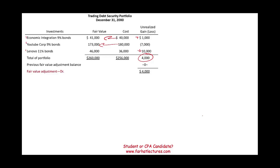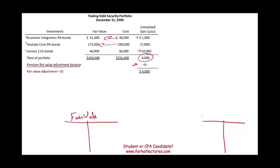Just to make it simple, this is the first year so we have no prior adjustment. Now we need to mark our investment portfolio to market. We're going to have an account called fair value adjustment, and an account called unrealized holding gain or loss.